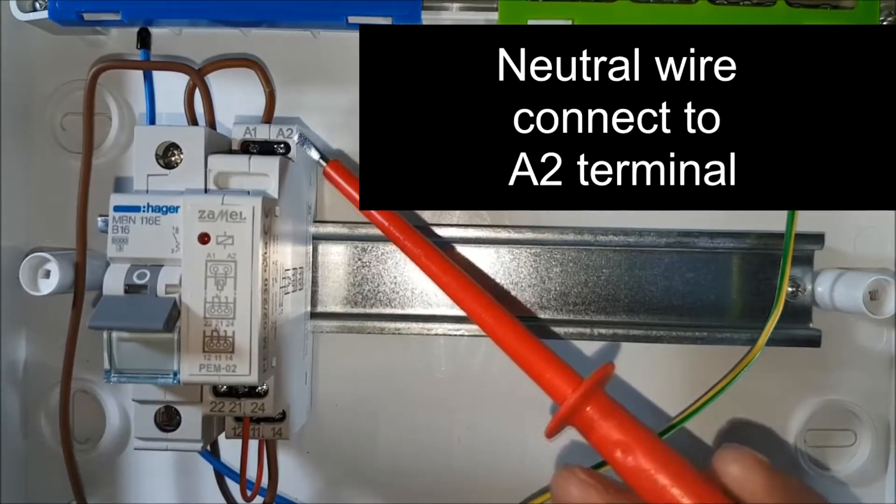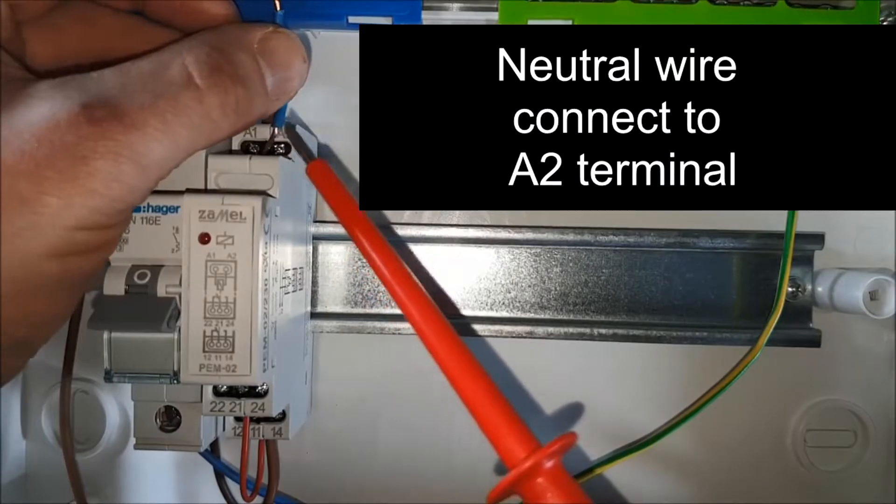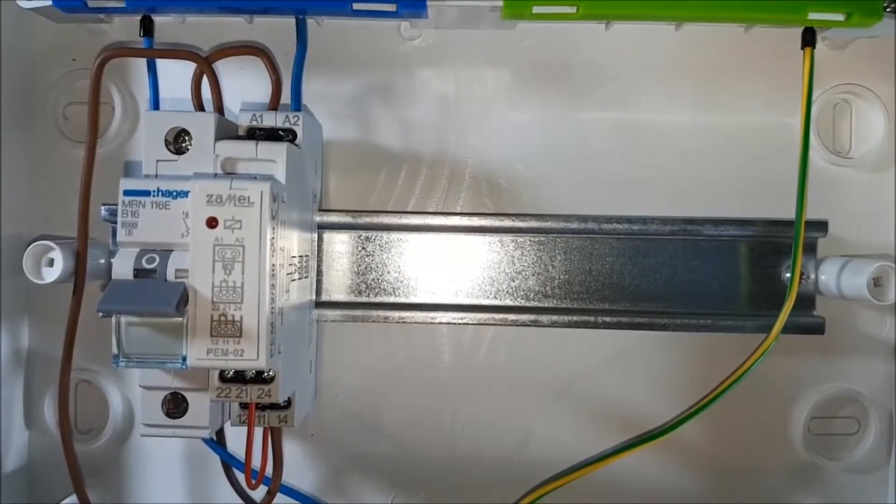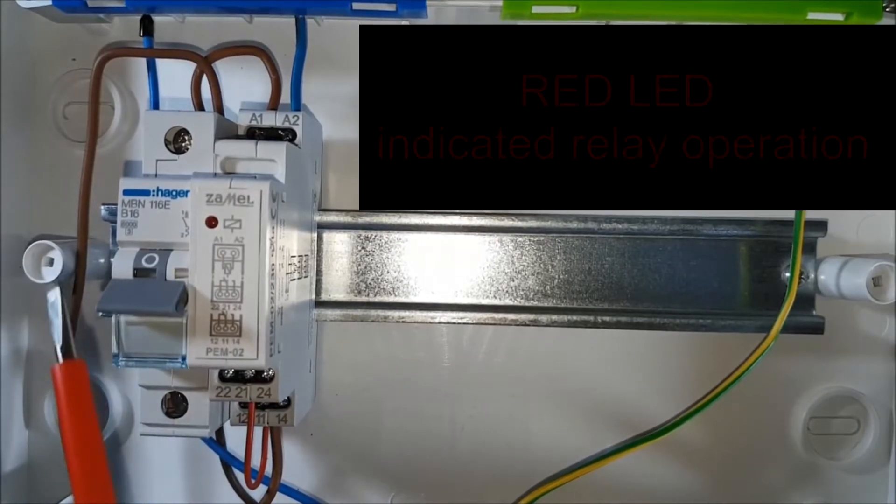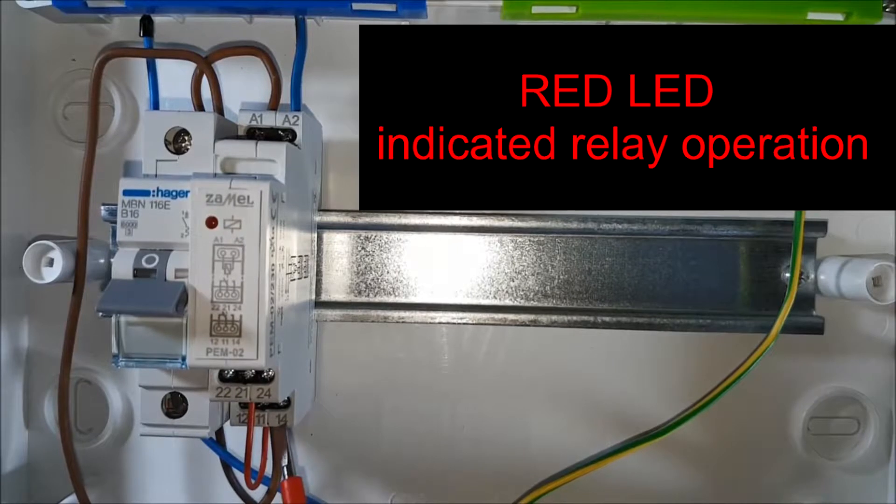Neutral wire, connect to terminal A2. Providing power supply causes the relay to start. This is indicated by a red LED. Output voltage appears on the output terminals 14 and 24 of the relay.